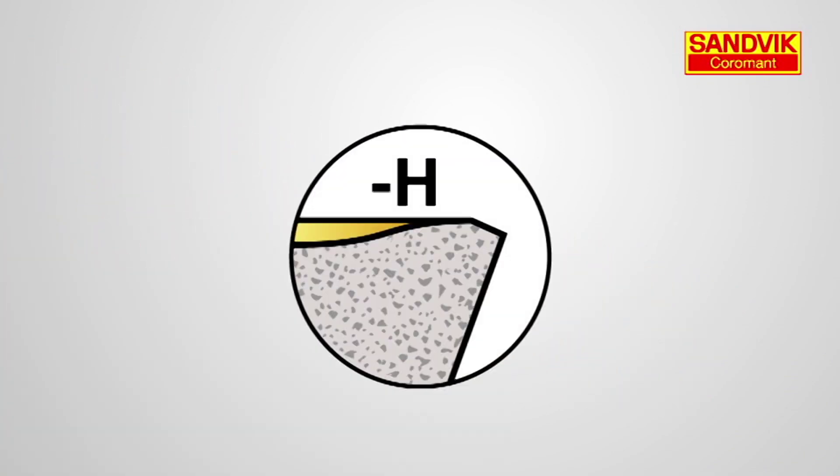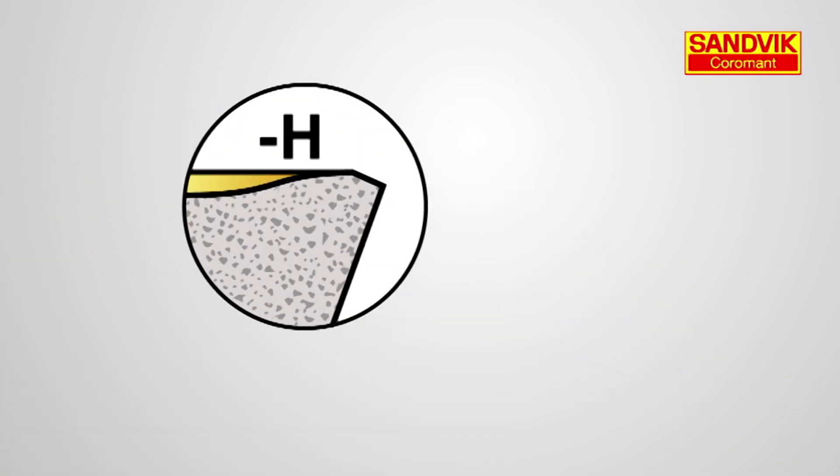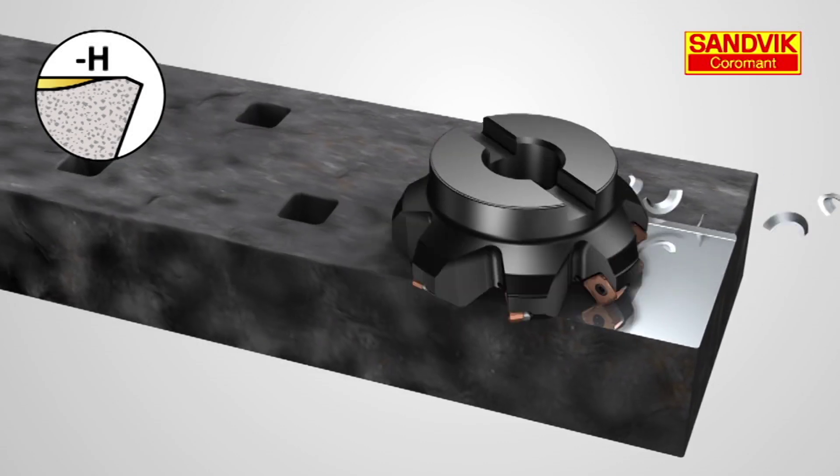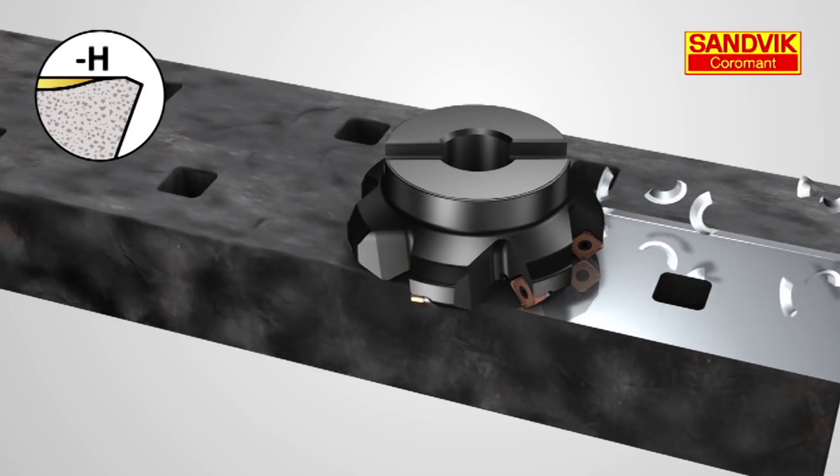H or heavy geometry, due to its strong edge, is ideal for unstable conditions, such as interrupted cuts.